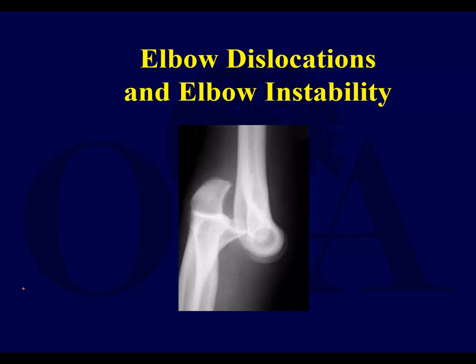This set of lectures is going to talk about elbow dislocations and elbow instability. It's broken up into three parts: first, elbow dislocations and instability, then olecranon fractures, and also radial head fractures. So first we'll talk about elbow dislocations and instability.